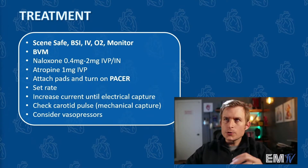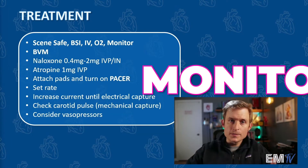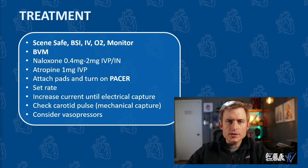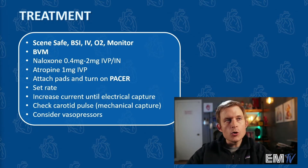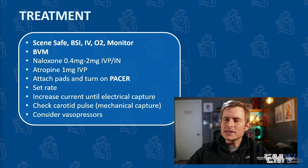Just like with all other Static Cardiology cards, you should be beginning your treatment by saying the mantra: Seen Safe BSI IVO2 Monitor. The next thing we'll do is BVM this patient — ventilate with a bag valve mask attached to 100% oxygen — because remember they are apneic. Because this is likely an opioid overdose, we'll go ahead and administer naloxone 0.4 to 2 milligrams, either given IV push or intranasally, and then we'll consider atropine 1 milligram IV push.